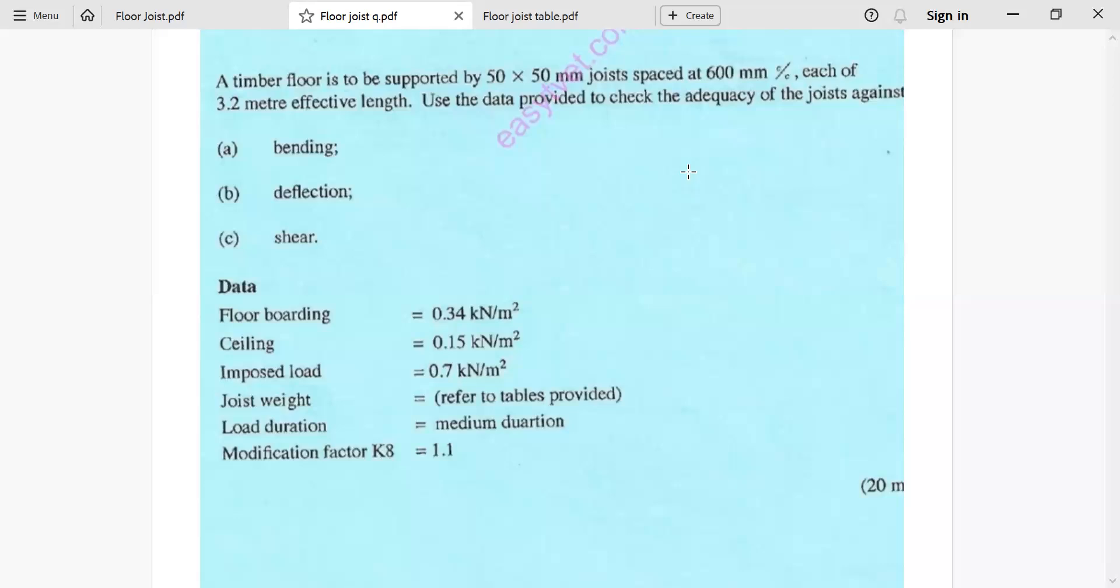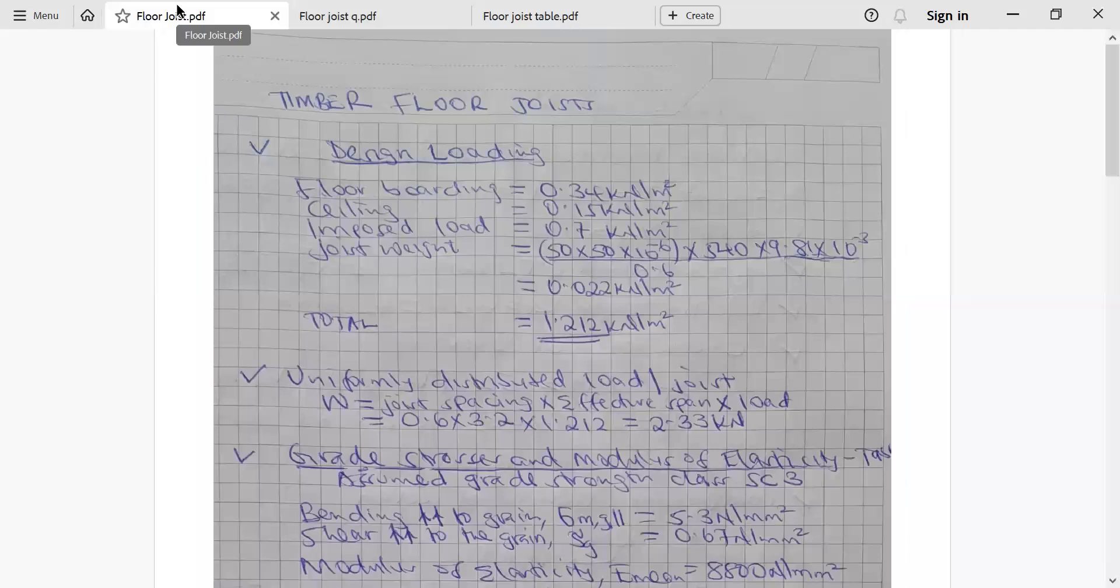This is how we shall proceed. Now we come here and say design loading: floor boarding, ceiling, then imposed load. How do we calculate joist weight? First of all, you have to select. I selected strength class SC3 of the timber, and this SC3 has the properties that we look at, but one of the properties I want to use here is the density. It has a density of 540 kilogram per cubic meter.